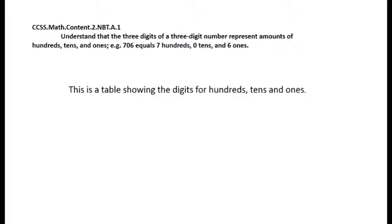Understand that the three digits of a three-digit number represent amounts of hundreds, tens, and ones. For example, 706 equals 7 hundreds, 0 tens, and 6 ones.